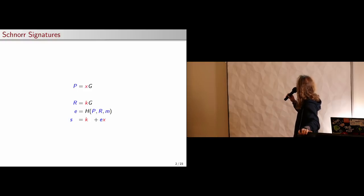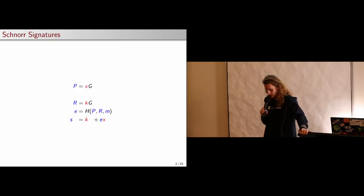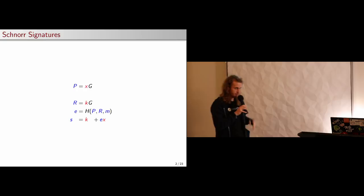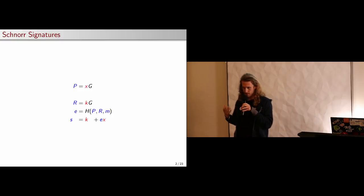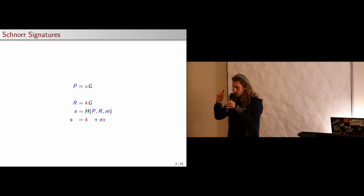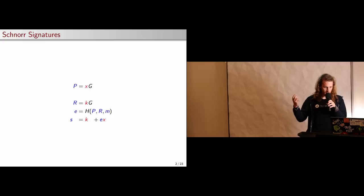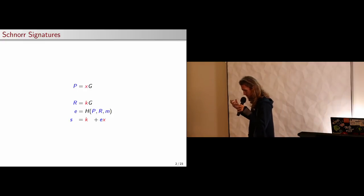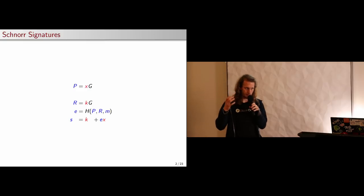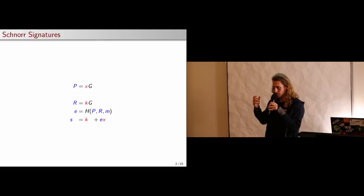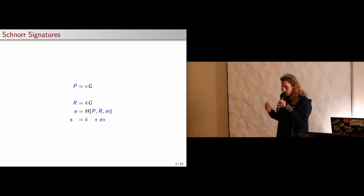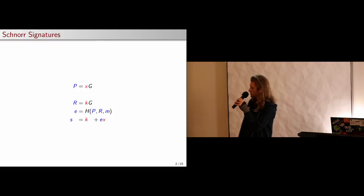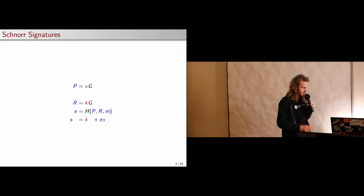So this is a Schnorr signature. Specifically, a Schnorr signature consists of these two values s and r, which are computed by the shown equations. We start with a key pair: a secret key which I've denoted x — I'll try to keep all secret values in red — and a public key called P. The way you get from this secret key to the public key is via an elliptic curve group generator G. You add G to itself x times to get the public key, and it turns out that if I give you some curve point you can't tell me how many times I added it. So this deserves the secrecy.